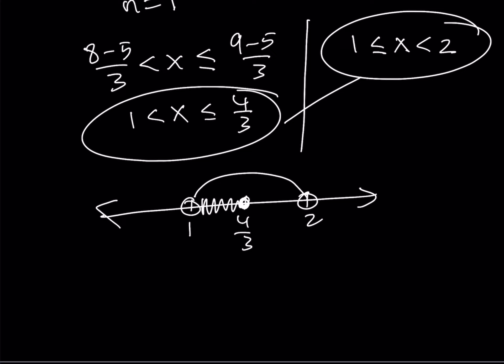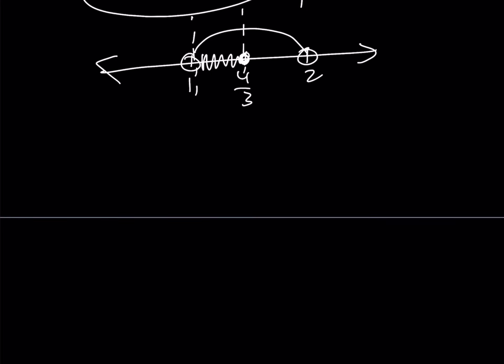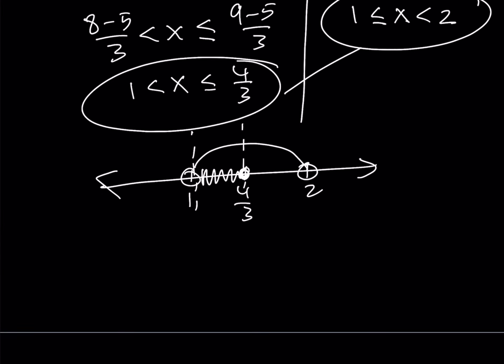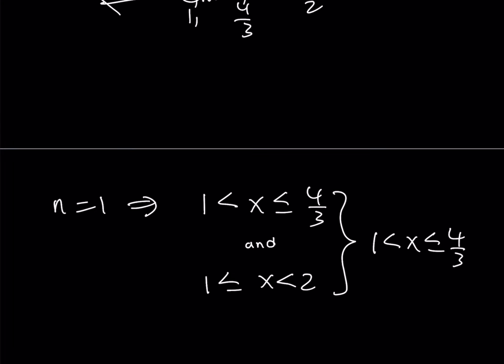The intersection is basically going to be the values of x that are between 1 and 4 thirds, where x can equal 4 thirds. So I basically got two inequalities here from n equals 1. Let me just summarize my findings. One of them gave me this, and the other one gave me this. And their intersection is going to be x is between 1 and 4 thirds. Of course, x can equal 4 thirds in this case, right?